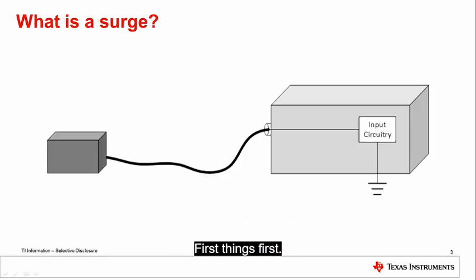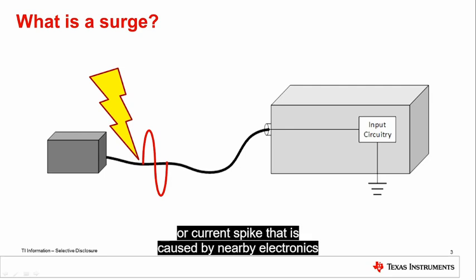First things first, what is a surge? A surge is an unexpected and transient voltage or current spike that is caused by nearby electronics or the environment. Surges are important to understand because they can cause electrical overstressed damage to IC inputs, creating system failures.